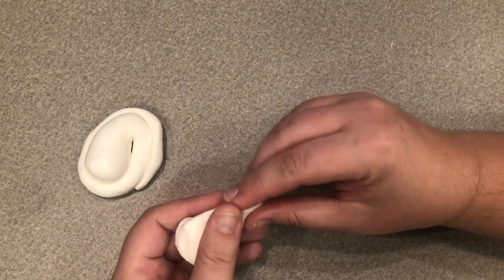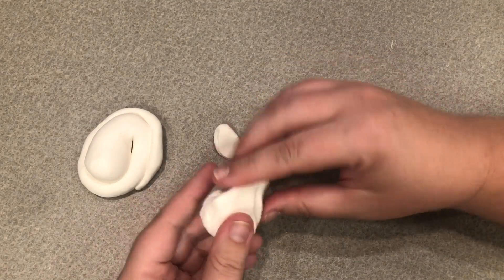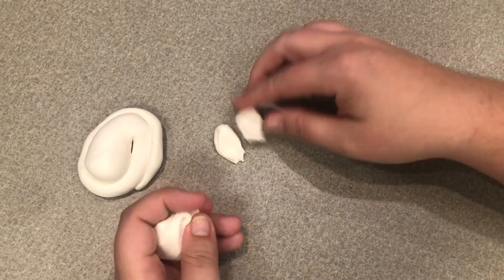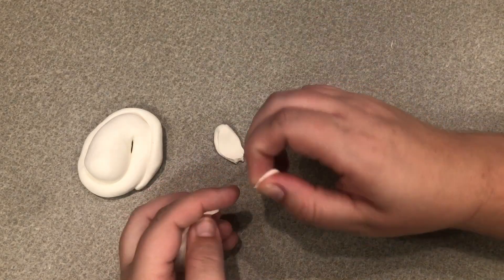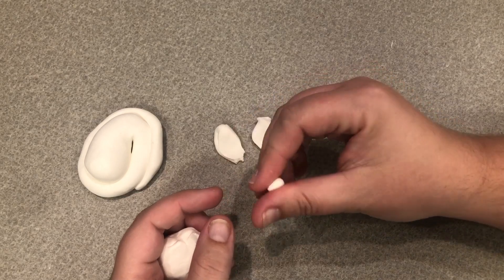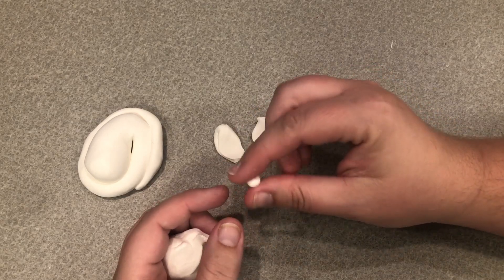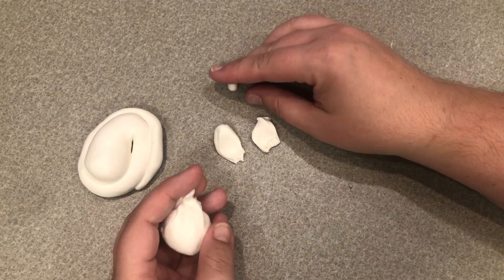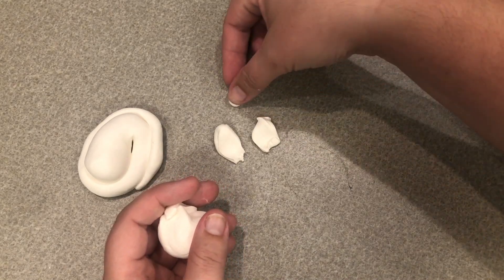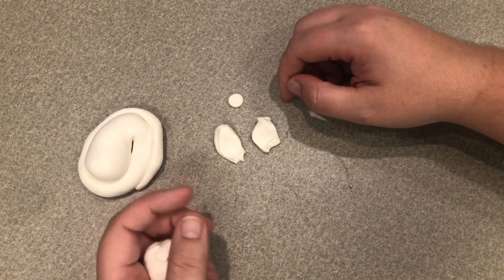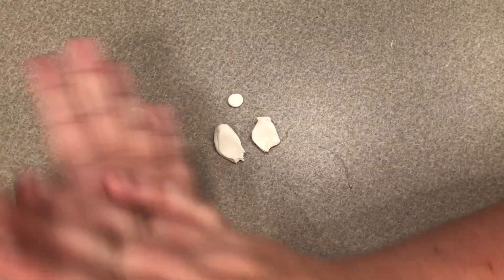Then I'm going to pinch off two small amounts to make the ears and just a little tiny piece to make the little white spot on his head. So I'll roll that into mostly a ball and then just squish it a little and that will be that piece.